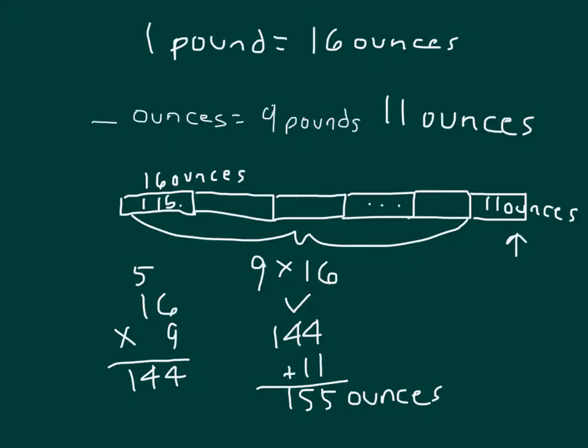So again, we figured out the conversion factor, and then we multiplied by that conversion factor, and we remembered to add back in those ounces there. So we have 155 ounces equaling 9 pounds 11 ounces.